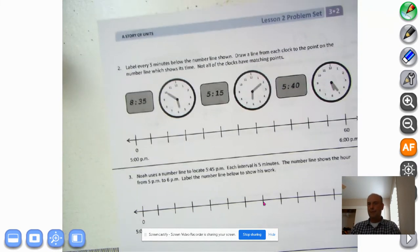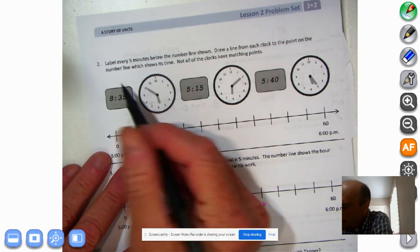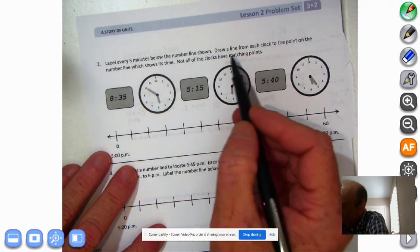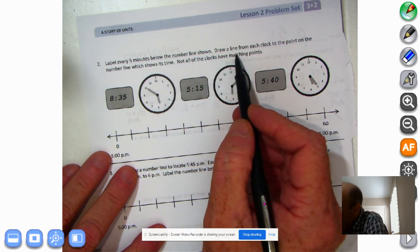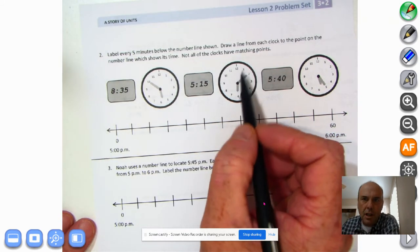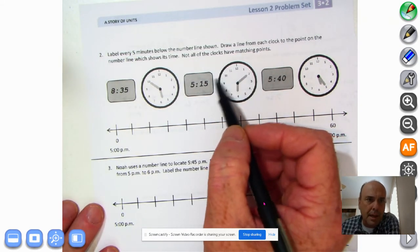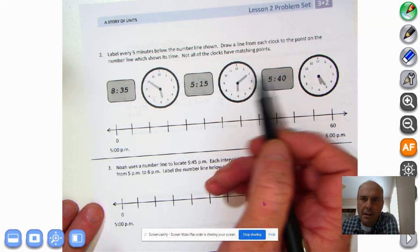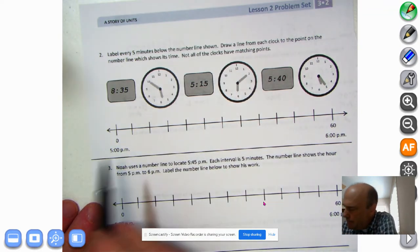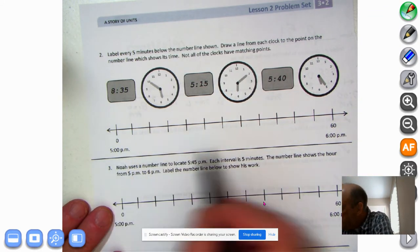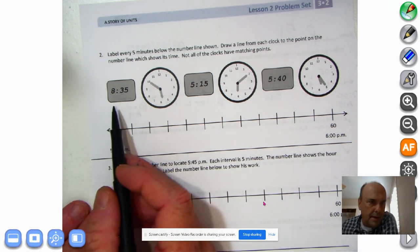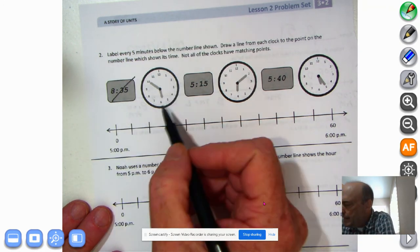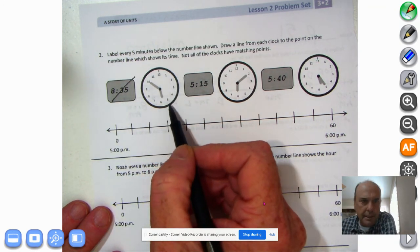All right, so let's turn the paper over. Problem set. And we'll look at number two. Label every five minutes below the number line shown. Draw a line from each clock to the point on the number line which shows its time. Not all the clocks have matching points. What? Not all the clocks have matching points. Goodness me. So we have 5 o'clock PM and 6 o'clock PM. Well, does 8:35, is that going to wind up there? No. No, I don't think so. Because it's 8 o'clock. It's past all that.